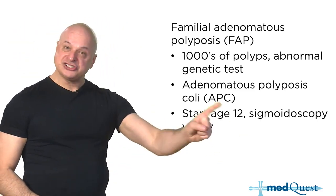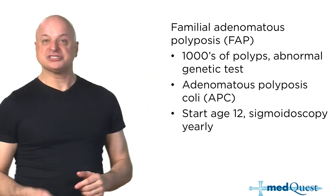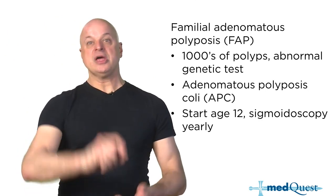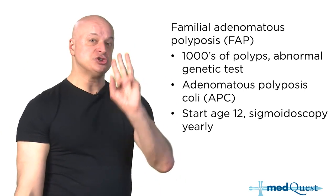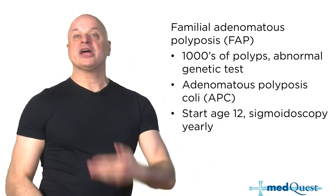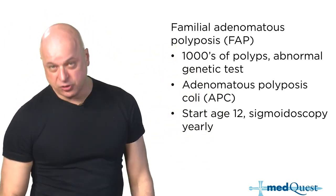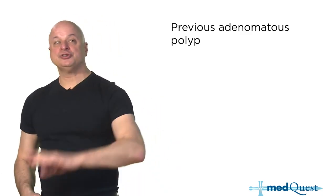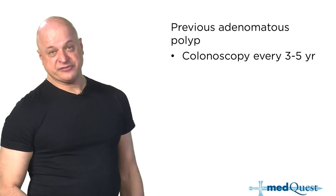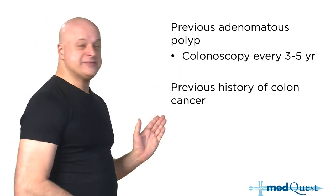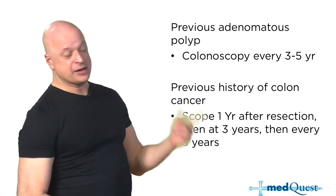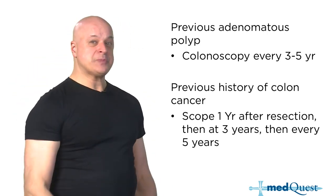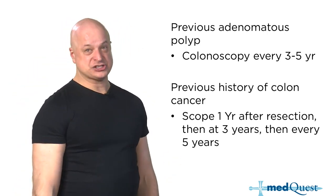Polyps in FAP can start as early as age 12. Sigmoidoscopy is acceptable in FAP and Gardner syndrome because unlike the general population (where it misses 40% of proximal cancers), in FAP the polyps occur throughout the whole colon — so you only need to go as far as the sigmoid colon. Start screening every year at age 12. By age 25 everybody has polyps, and by age 50 everybody has colon cancer.